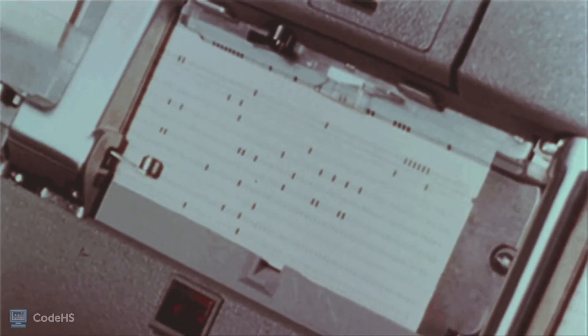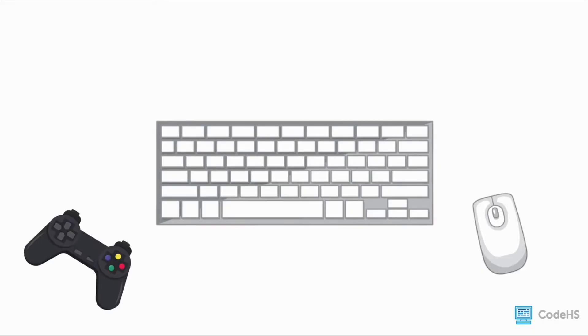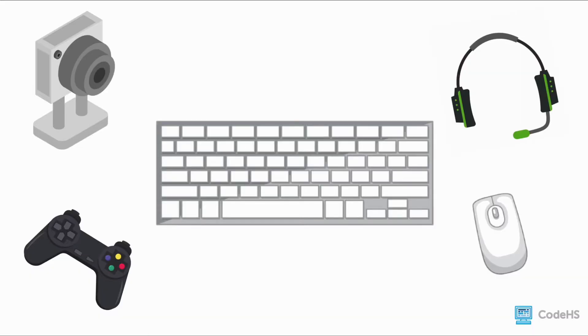Later, computer systems were designed so that humans could directly interact with computers using interactive hardware, such as a keyboard, a computer mouse, controllers, touchscreens, microphones, and even cameras. The information that humans input using these devices allow them to control the elements on the screen.